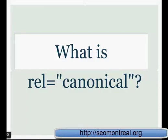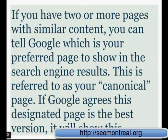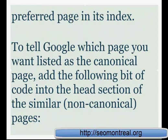Another question is: what are canonical pages or canonical references? If you have two or more pages with similar content, you can tell Google which is your preferred page to show in search engine results. This is referred to as your canonical page. If Google agrees this designated page is the best version, then it will show it and index it.